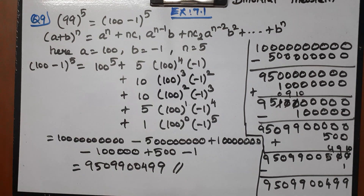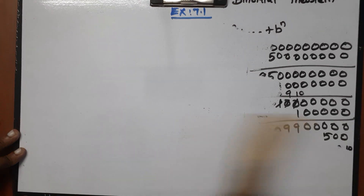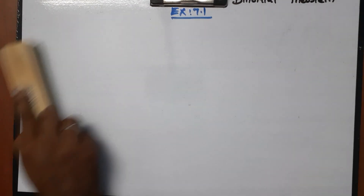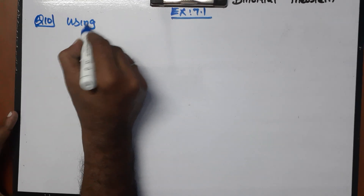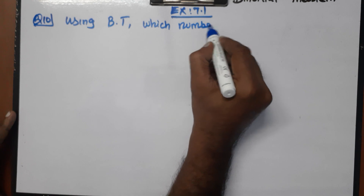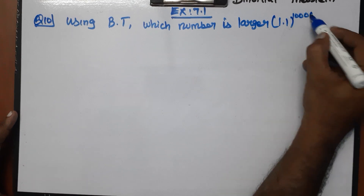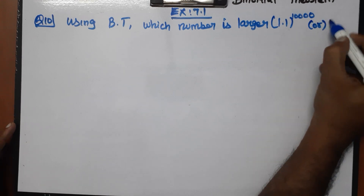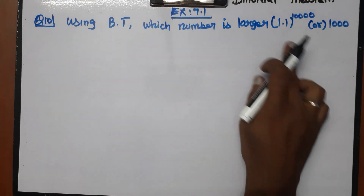Now question number 10: Using the Binomial Theorem, which number is larger — 1.1 whole power 10,000 or 1000? How do we determine which number is larger using the Binomial Theorem?